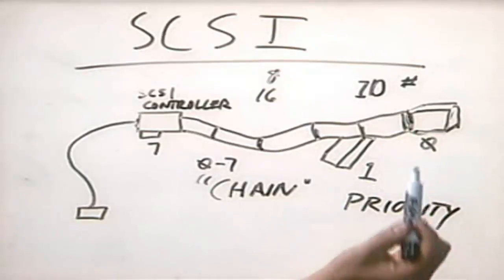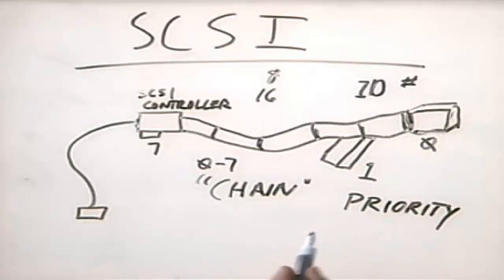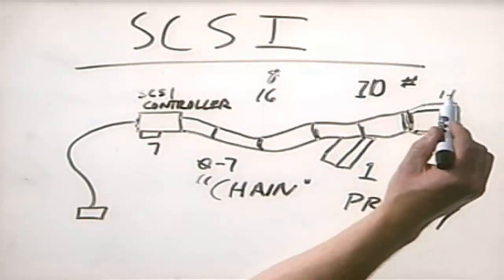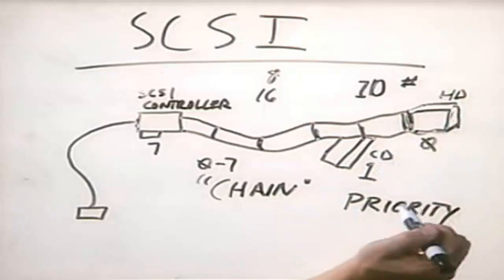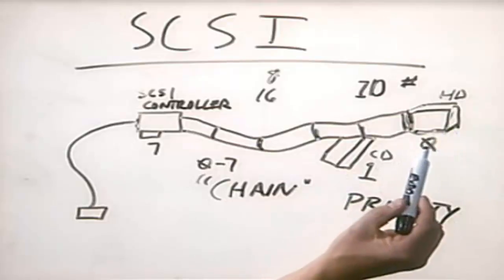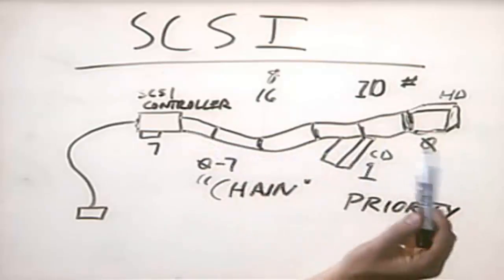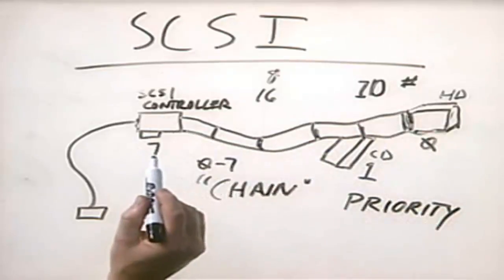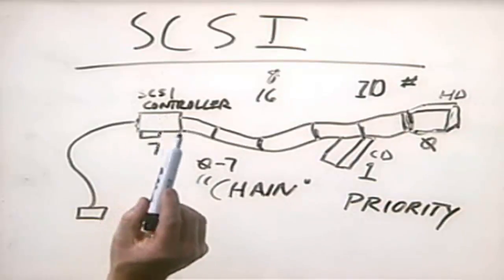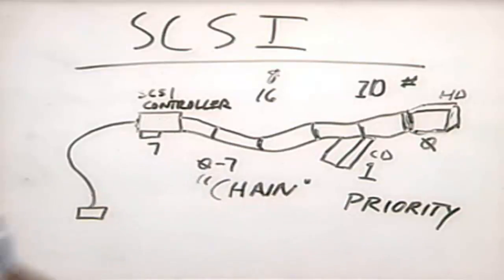The SCSI ID number sets the priority of the device: the lower the number, the higher the priority — which is counterintuitive but makes sense once you're used to it. For example, a hard drive configured as ID zero has higher priority than a CD drive configured as ID one, which is what you want. The SCSI controller is typically set to the highest ID number — seven — meaning it has the lowest priority on the chain.